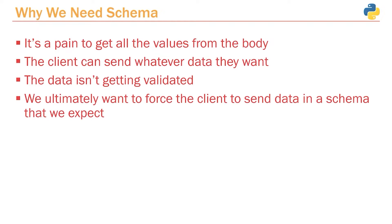Ultimately what we want to do is force the user into a schema that we can expect. That's the term we always use with APIs — a schema — where we define exactly what the data should look like, almost like a contract between the front end and the back end. The back end sends a message to the front end saying: I expect my data to look like this. If you don't send me data that looks exactly like this, I'm going to give you an error. You want to explicitly define what the data should look like so that the front end can send you exactly what you expected.